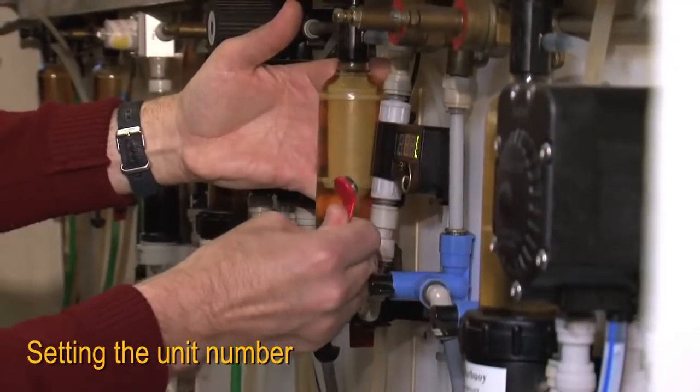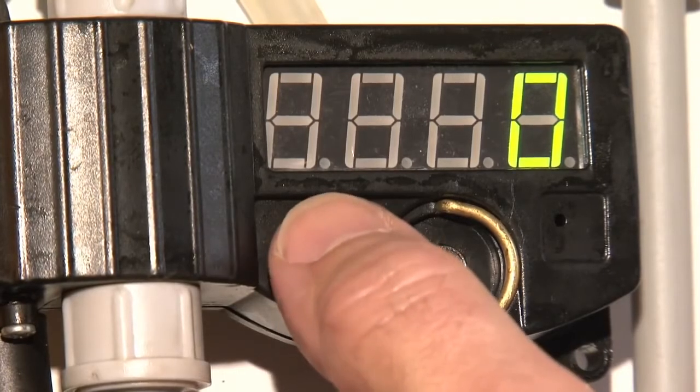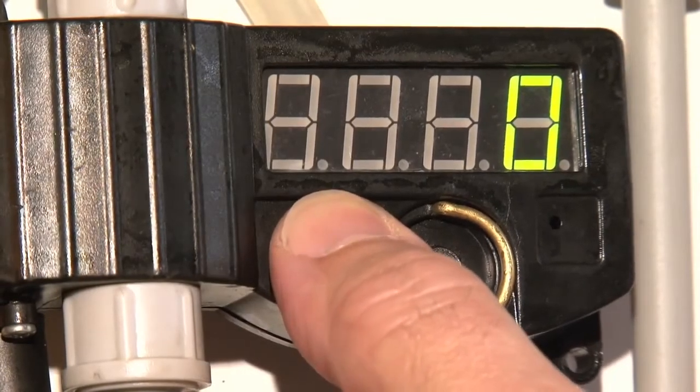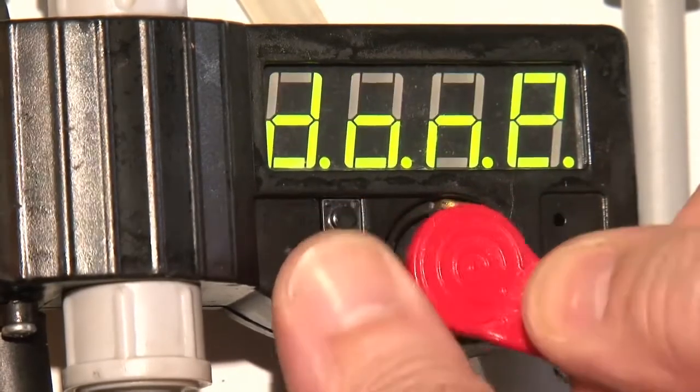Setting the unit number, press the small button again carefully to show zero zero zero one, then touch the key onto the key location to confirm and the display will show done.